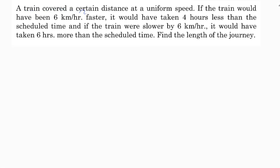A train covered a certain distance at a uniform speed. If the train would have been 6 km per hour faster, it would have taken 4 hours less than the scheduled time. And if the train was slower by 6 km per hour, it would have taken 6 hours more than the scheduled time. Find the length of the journey.